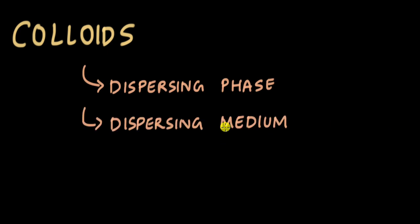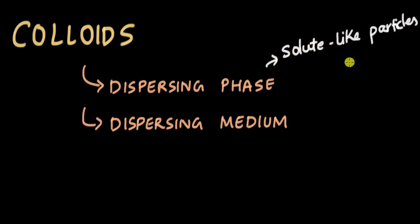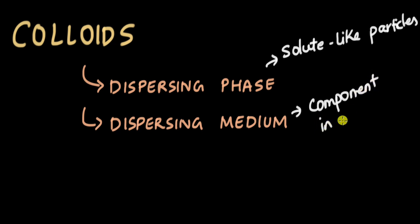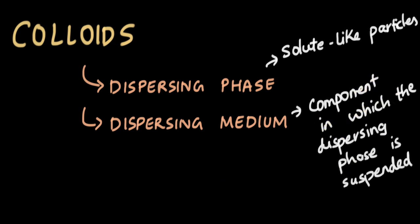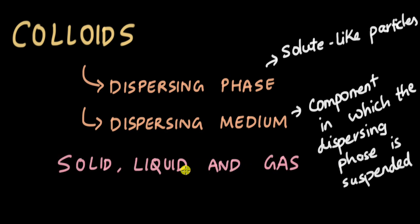In order to understand different types of colloids, we need to understand their components. A colloid has two components: the dispersing phase and the dispersing medium. The dispersing phase consists of the solute-like particles that are dispersed, while the dispersing medium is the component in which the dispersing phase is suspended. Colloids are classified according to the state — solid, liquid, or gas — of both the dispersing phase and the dispersing medium.